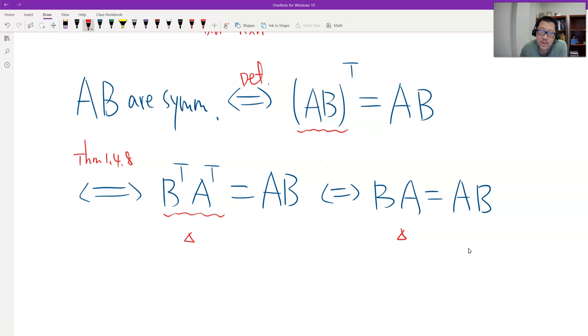Because B and A are symmetric. B and A both are symmetric. That's the condition. Can you see? Is this the proof?